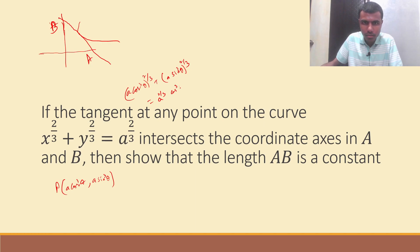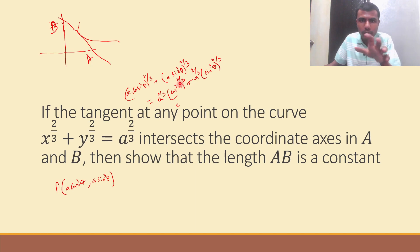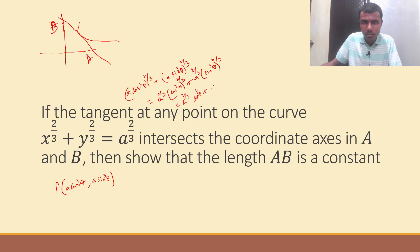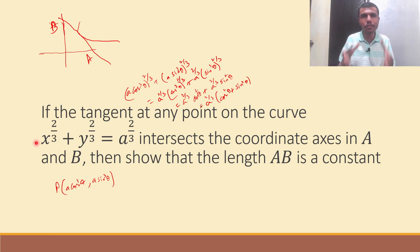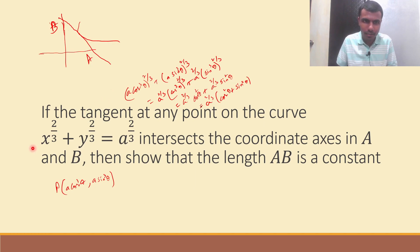Listen carefully: cos³θ raised to power 2/3 — the 3s cancel — gives cos²θ. Similarly for the sine term. So I get a^(2/3)·cos²θ + a^(2/3)·sin²θ. Taking a^(2/3) common, I'm left with cos²θ + sin²θ = 1, giving a^(2/3). That's the RHS, so the point lies on the curve. I'm explaining this because I don't want you to just mug it up and forget it in the exam.